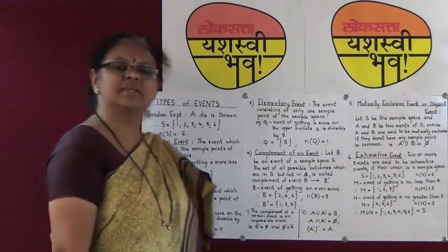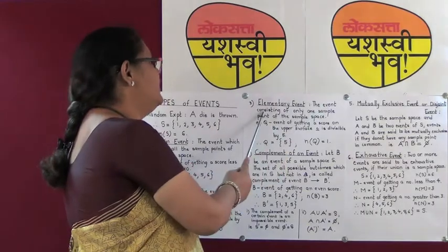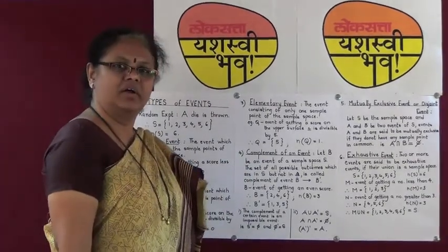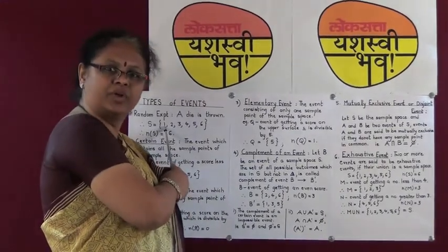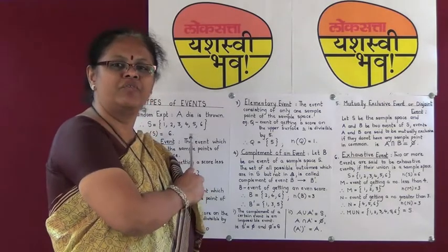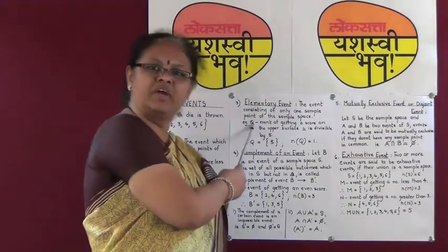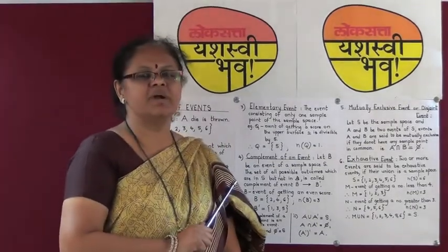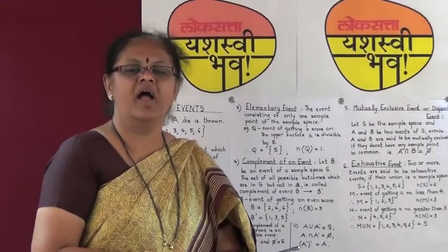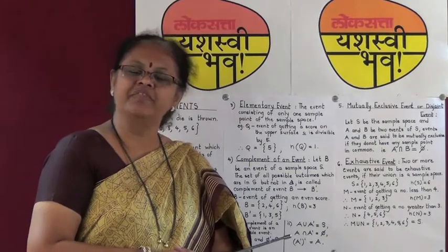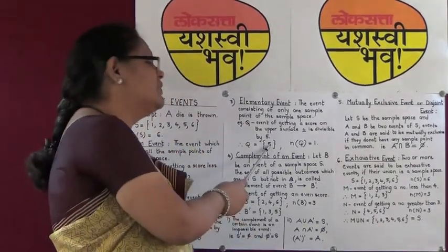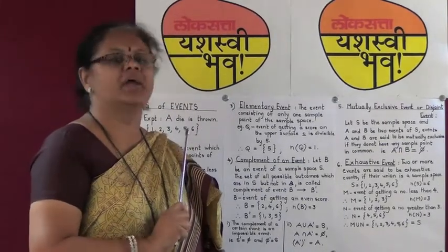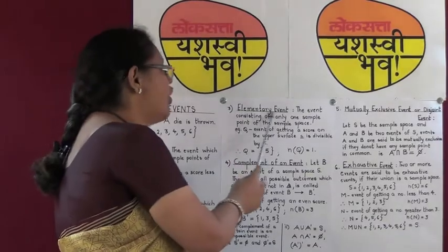The third type is elementary event. The event consisting of only one sample point in the given sample space is called an elementary event. Using the same example where a die is thrown with sample space {1, 2, 3, 4, 5, 6}, event Q is the event of getting a score divisible by 5. Numbers divisible by 5 start from 5 onwards, and from the 6 faces of the die, only 5 qualifies. Hence we get only one sample point in this event, and therefore event Q is called an elementary event.